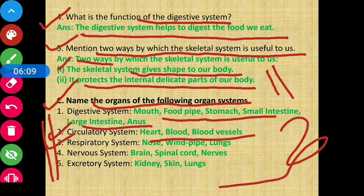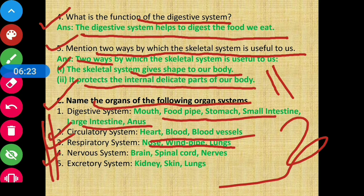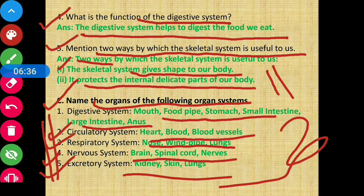Respiratory system organs are: nose, wind pipe, and lungs. Next, the nervous system — its main components are: brain, spinal cord, and nerves. Finally, the excretory system — its organs are: kidney, skin, and lungs. These are the main components of these particular organ systems.